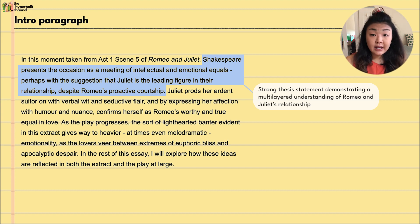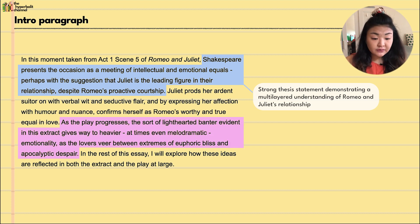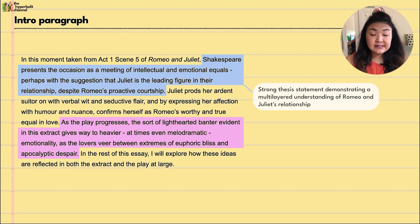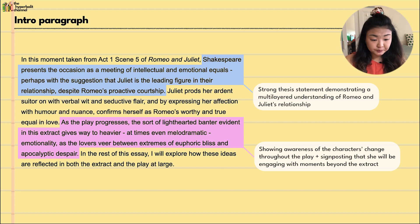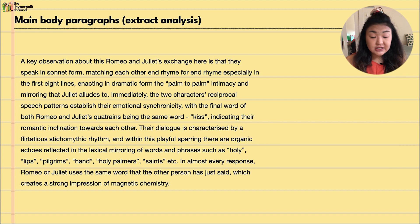Juliet prods her ardent suitor on with verbal wit and seductive flair, and by expressing her affection with humor and nuance confirms herself as Romeo's worthy and true equal in love. As the play progresses, the light-hearted banter evident in this extract gives way to heavier, at times even melodramatic emotionality, as the lovers veer between extremes of euphoric bliss and apocalyptic despair. The student shows awareness of examining the play as a whole.